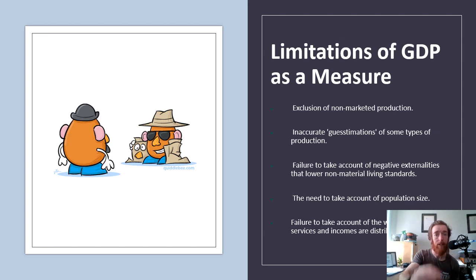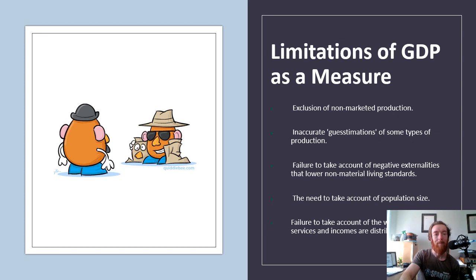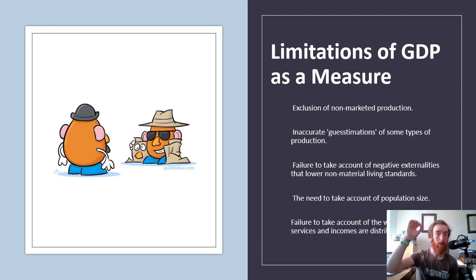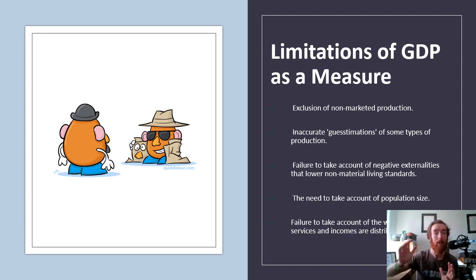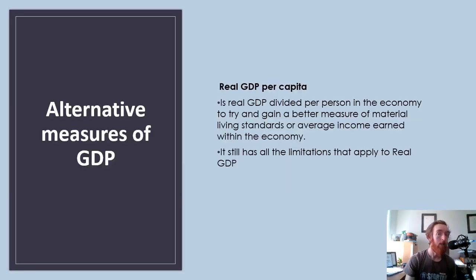There's also a failure to account for how goods, services, and incomes are distributed. When there are high levels of economic growth, the rich get a better portion of it than low-income earners. People who own businesses and companies get a high percentage of profits — not a lot trickles down. So high levels of growth can actually lead to greater inequality, making the disparity between different parts of the economy worse, which we'll cover in more detail in the next topic.